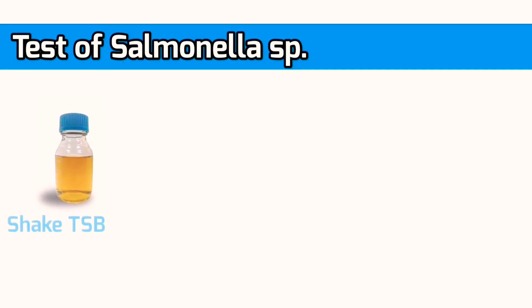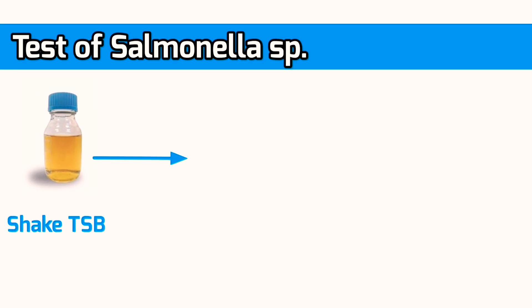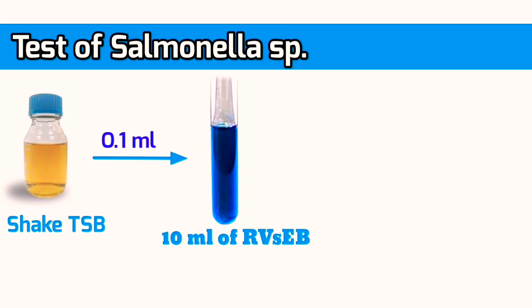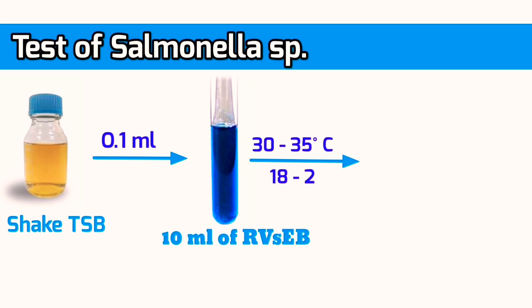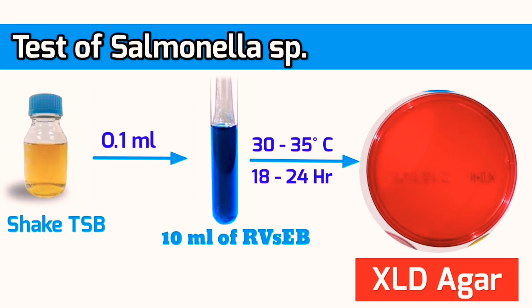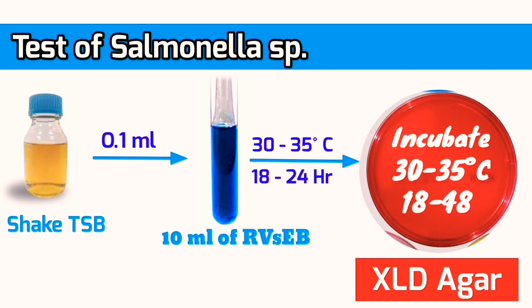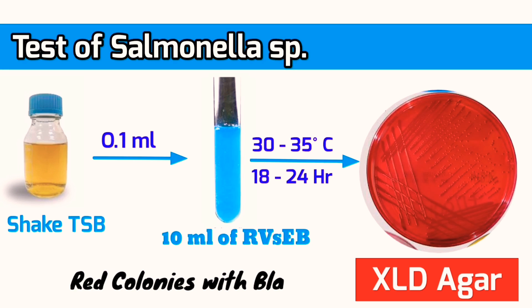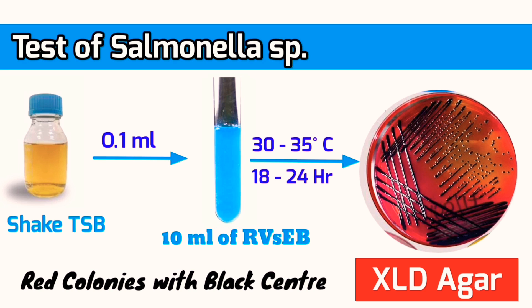For Salmonella detection: after incubation of tryptone broth, shake the broth well and transfer 0.1 ml into 10 ml of Rappaport-Vassiliadis enrichment broth and incubate at 30 to 35 degrees Celsius for one day. After that, subculture onto Xylose Lysine Deoxycholate agar (XLD) and incubate at 30 to 35 degrees Celsius for one to two days. Growth of red colonies with black centers indicates the presence of Salmonella.